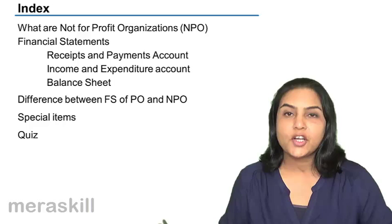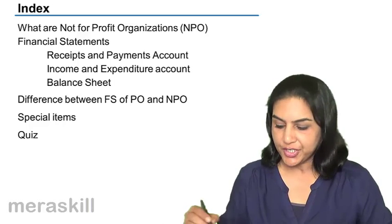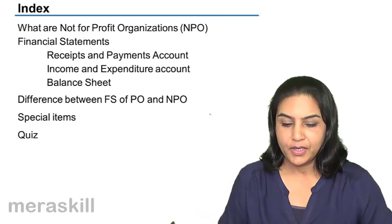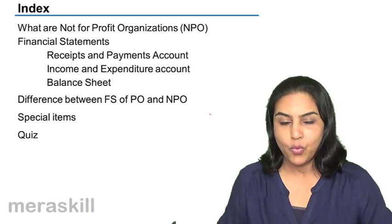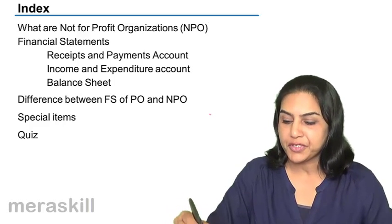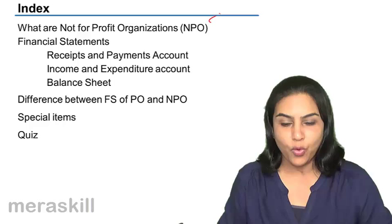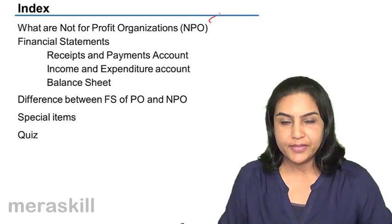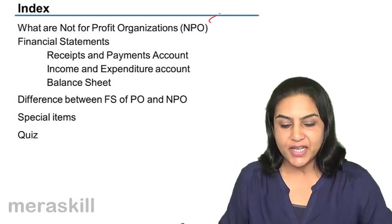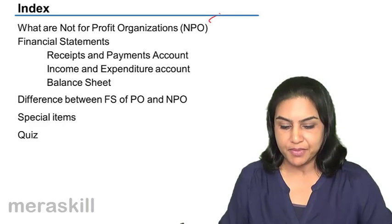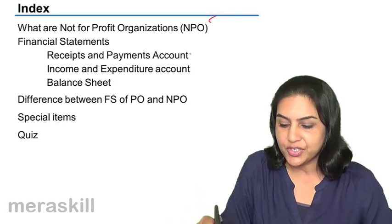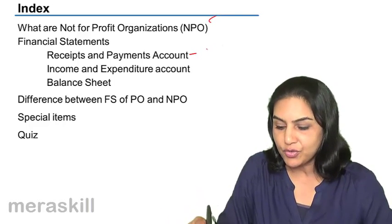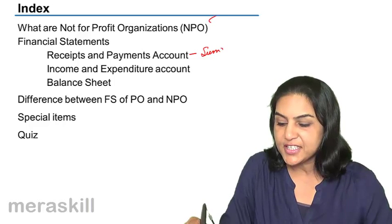The course of our discussion would be structured as below. We will first discuss what not-for-profit organizations are, what we mean by them. Then we will discuss each of the financial statements, starting with the receipts and payments account, which is nothing but a summary cash book.